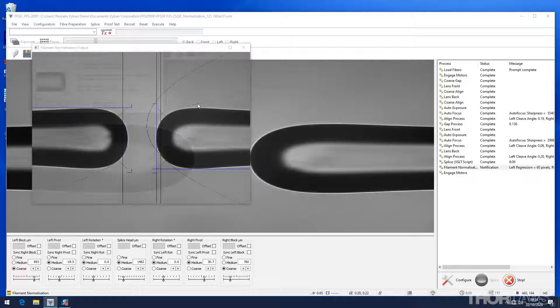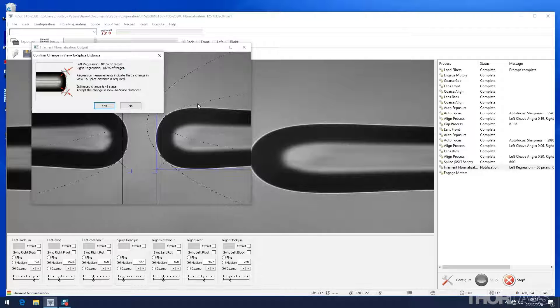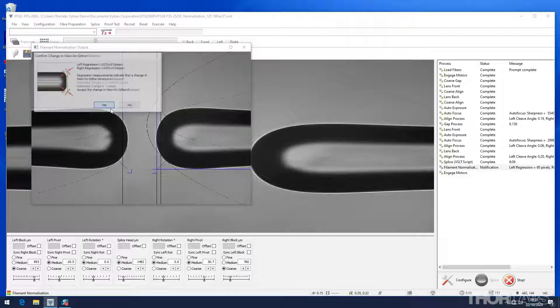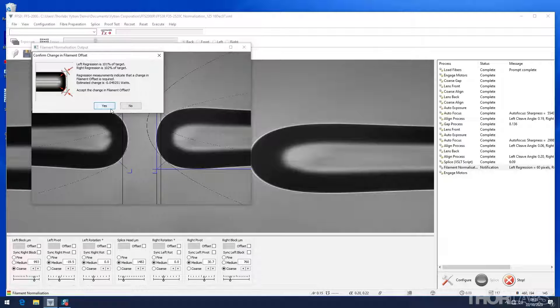In order to monitor the behavior of the filament over its lifetime, it is good practice to keep a log of the filament power offset and view to splice distance set by the normalization process each time this is carried out.